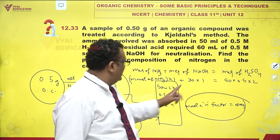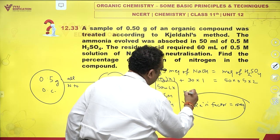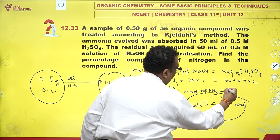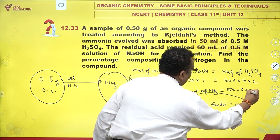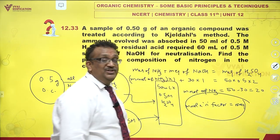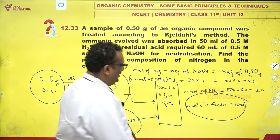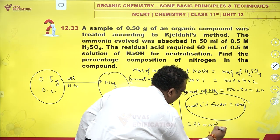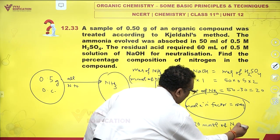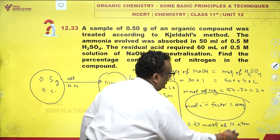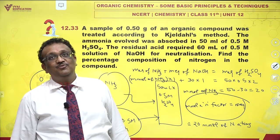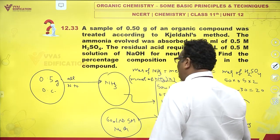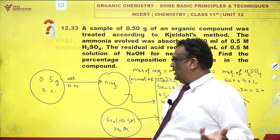The right-hand side is 50, and NaOH contributes 30. So millimoles of ammonia comes out to be 50 minus 30, which is 20. We have 20 millimoles of ammonia. That means this corresponds to 20 millimoles of nitrogen atoms, because 1 ammonia contains 1 nitrogen atom. So, 20 millimoles of nitrogen atoms.